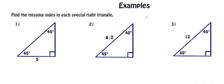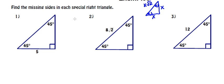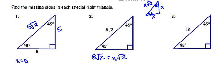These are 45-45-90 triangles, so each leg is x and the hypotenuse is x√2. In the first example, they've given us a side across from a 45°, so x = 5. The other leg is also x = 5, and the hypotenuse is x√2 = 5√2. In the next example, 8√2 is across from the right angle, so it's our x√2 value. Dividing by √2, x = 8, which then gives us both leg values of 8.